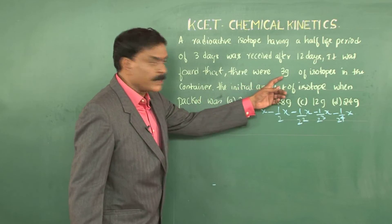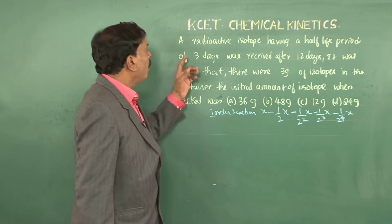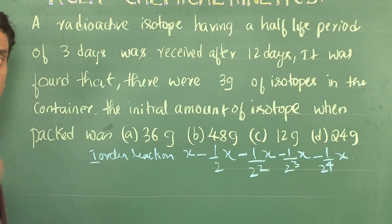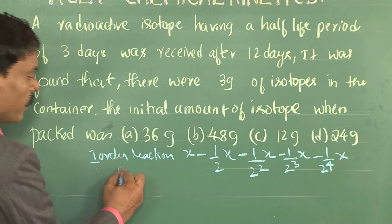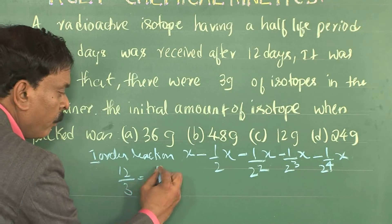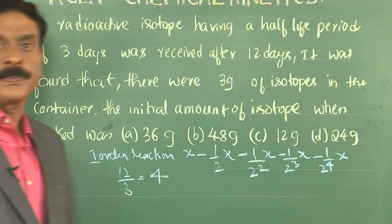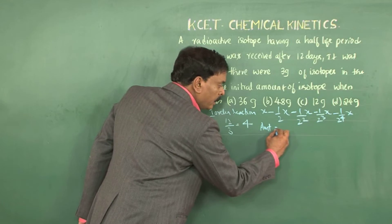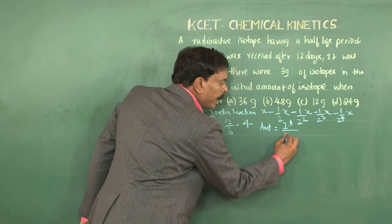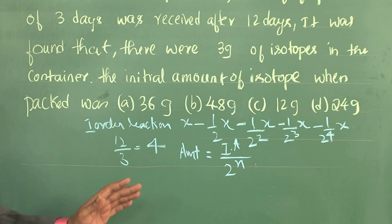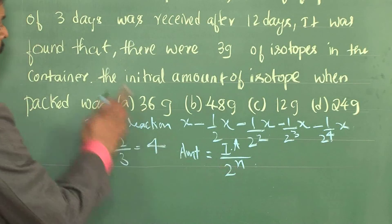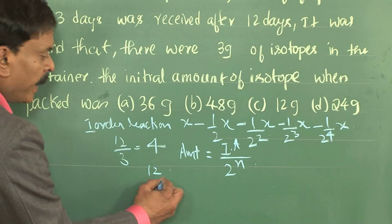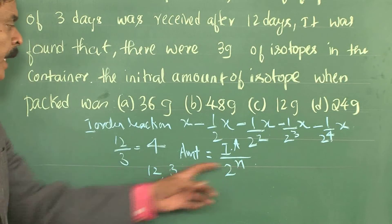The amount received is 3 grams. The half-life period is 3 days, and the isotope was received after 12 days. In 12 days, there are 4 half-life periods. During 4 half-life periods, the amount left behind equals the initial amount divided by 2 to the power N, where N is the number of half-life periods. Here N = 12 / 3 = 4.